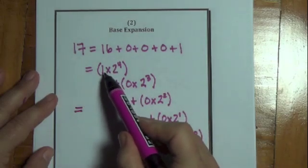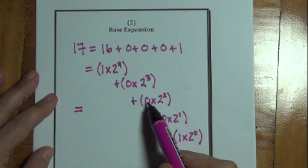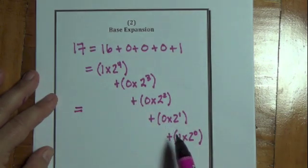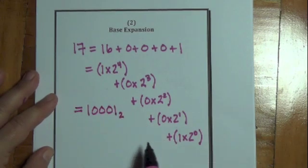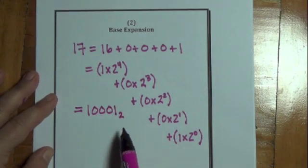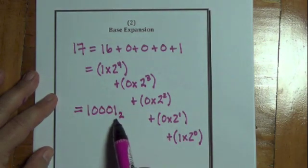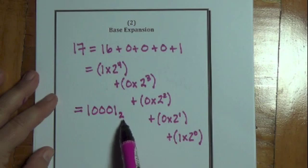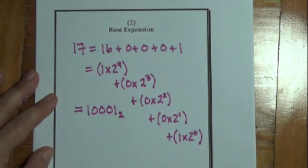I look at the numbers in front of the powers of 2. They are 1, 0, 0, 0, 1. And that gives me the base 2 representation of the base 10 number 17. Notice when I write a binary number, that is a base 2 number, I put a little subscript here, 2, to indicate that this is a base 2 number. When there is no subscript, we assume the number is base 10.